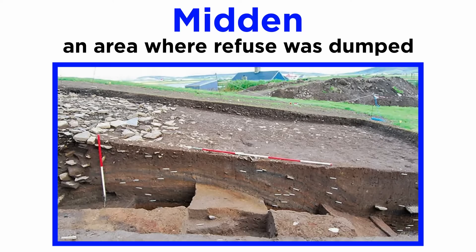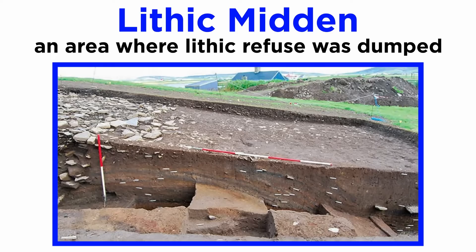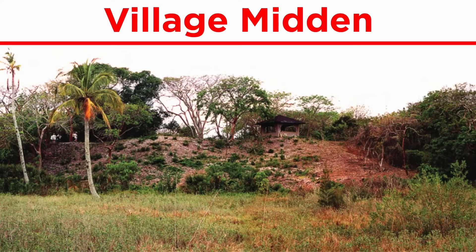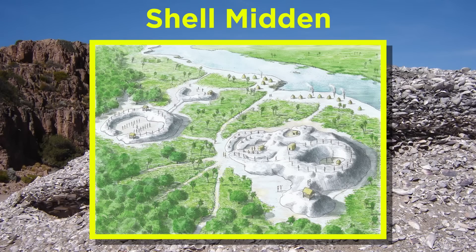The last feature we will discuss are middens. Middens are areas where refuse was dumped. Middens can be a single type of artifact, such as how a large pile of lithic refuse would be a lithic midden, or they can contain a variety of artifacts. Middens can get so large that they form artificial platforms and mounds, and are incorporated into the architecture of the site. For example, on flat plains, sites can sometimes be identified from village middens — the refuse that slowly built up over centuries under a town. In North America, shell middens were used like mounds, having buildings atop them.